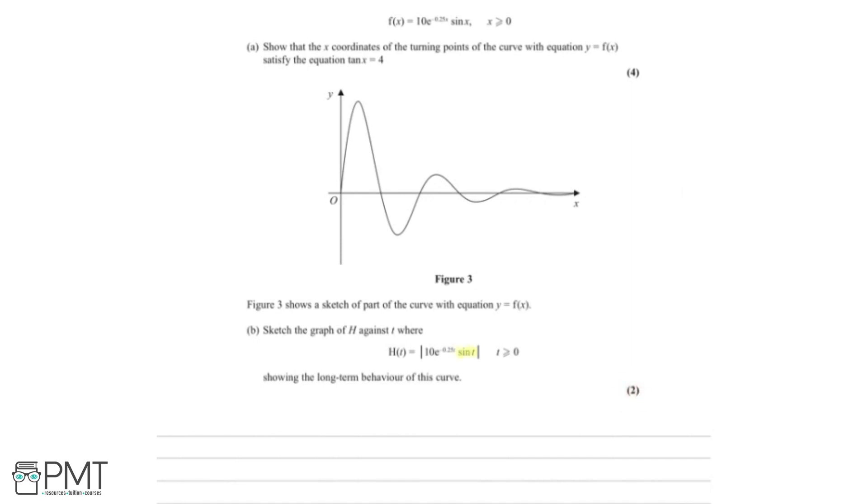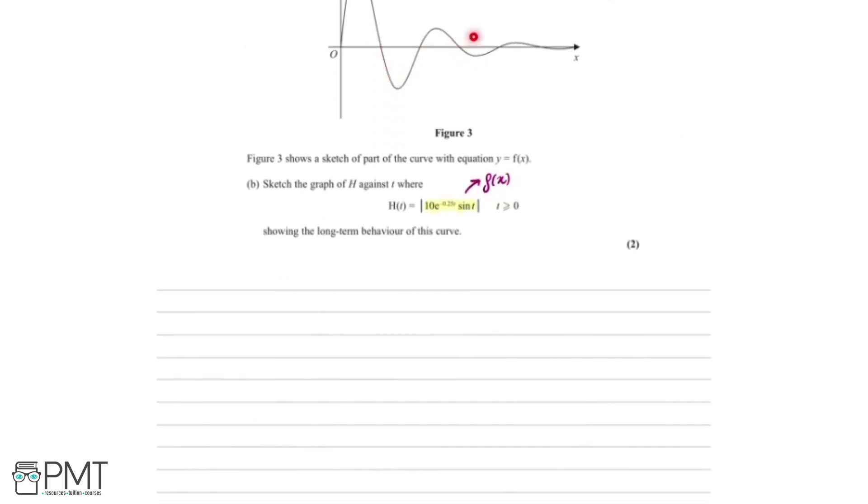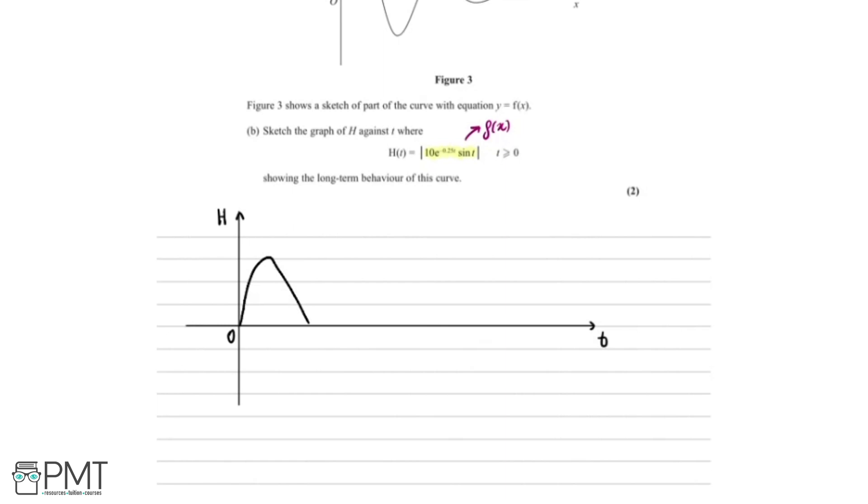So first thing to notice is that actually inside this modulus is actually f(x). And that's great because we can see up here, it says figure 3 shows a sketch of part of the curve with equation y equals f(x). So the difference with h(t) is that it's the modulus of f(x). So essentially what's going to happen is all these negative parts here are going to flip over and be positive like this. It's going to have the same shape of f(x).